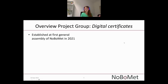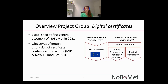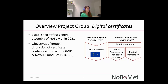Coming to the overview of what we're doing there — this was established at the First General Assembly of NOBOMED in 2021, and it focuses on the three big modules in NAWID and MID. We said the most typical ones are type examination, quality assurance and production process, as well as product verification. These are all product certifications on their own, working as a certification system within the directives. The aim of this group is to get some machine-readable document or description out of this.